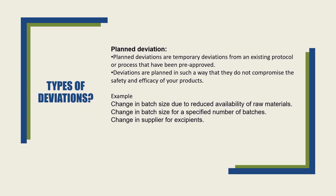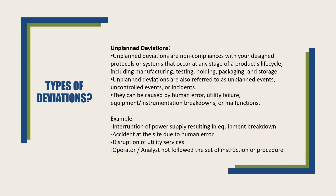Here are a few examples of planned deviations: change in batch size due to reduced availability of raw materials, change in batch size for a specified number of batches, and change in supply or equipment. Now the second type is unplanned deviations, which are non-compliances with designed protocols or systems that occur at any stage of the product life cycle, including manufacturing, testing, holding, packaging and storage.